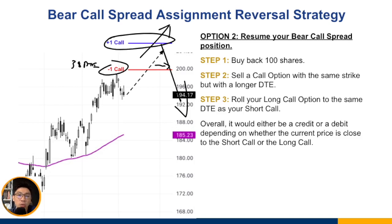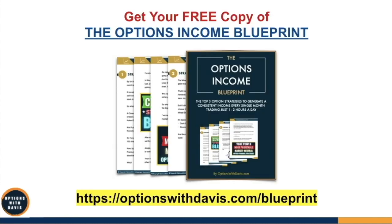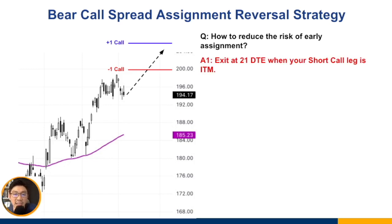But the best thing is to try and avoid assignment in the first place. The first way is to exit at 21 DTE when your short call leg is in the money. If there's still around 30 days left to expiration and it's in the money, there's still some extrinsic value left and chances of early assignment are still low. If you don't get assigned and it's around 21 DTE with the short call strike in the money, just exit the trade and wait for another opportunity.